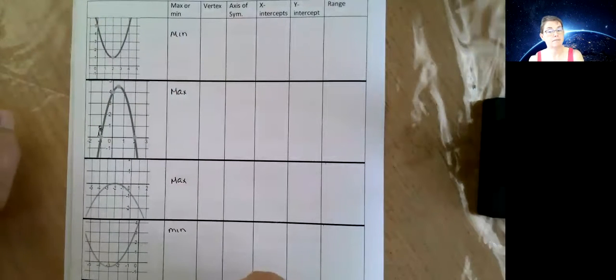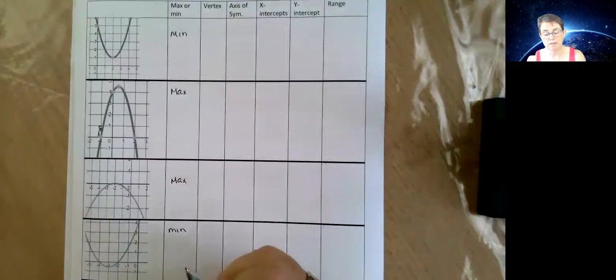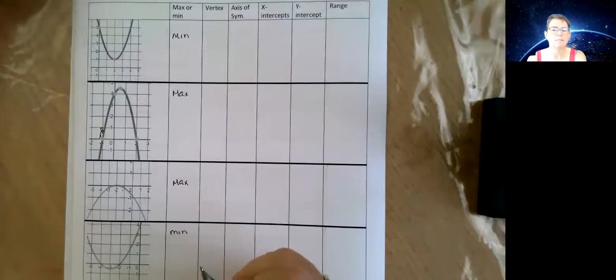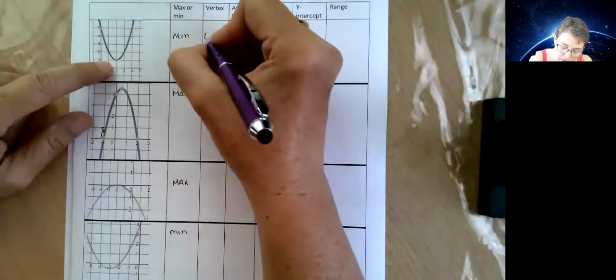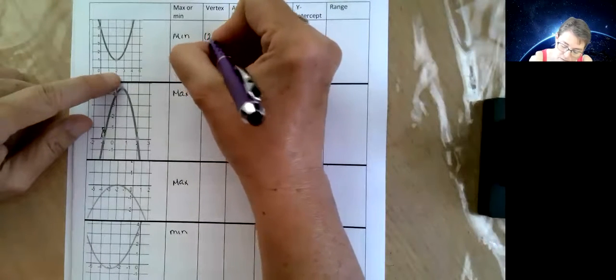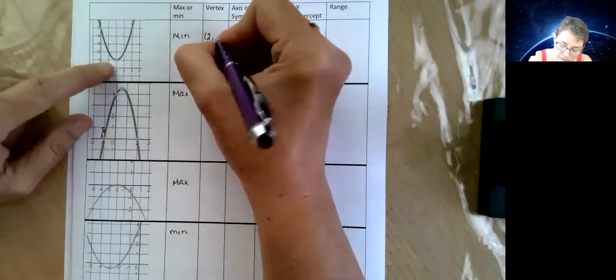So all the time, guys, if it opens up, it's a minimum. If it opens down, it's maximum. Vertex. Vertex is where it changes direction. You know what? I suspect you should be able to pause this right now, do the whole thing and turn it back on. Because I think you got this.